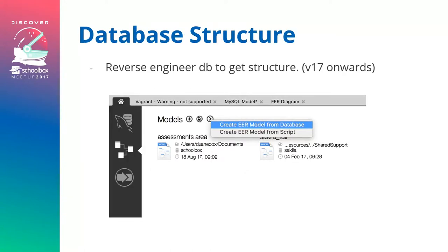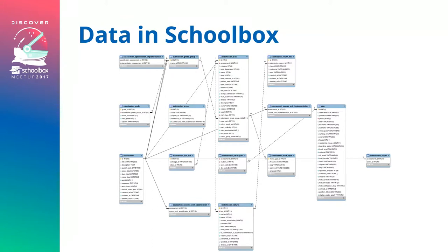Software-wise, I use MySQL Workbench — it's a very simple, free user interface that makes it easy to visualise information. Our support team uses command line, but any tool that handles an SQL database will work. One reason I like MySQL Workbench is it allows you to look at the database structure. In version 17 we've started putting foreign keys into our database tables, which lets you look at the structure and visualise it. You can create an EER diagram and reverse engineer it from the database.